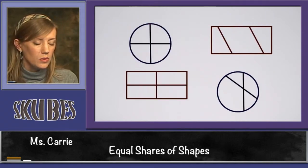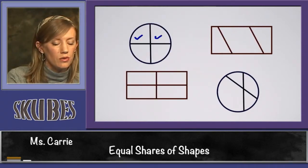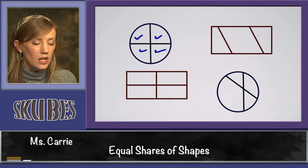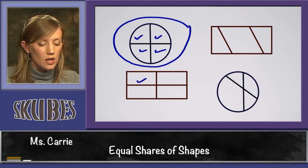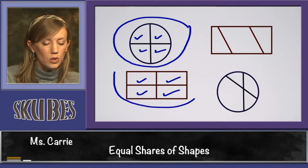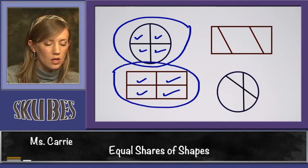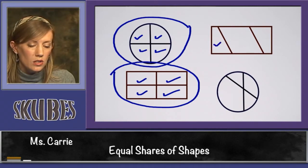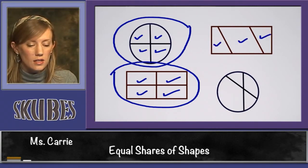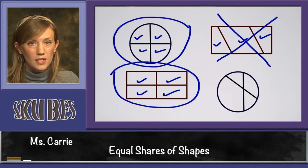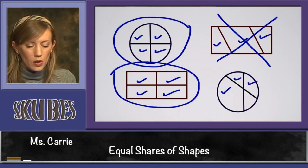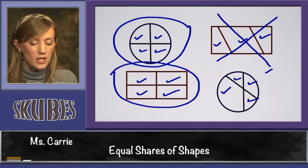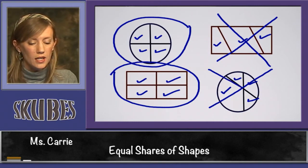Let's look at four more shapes. This first one — one, two, three, four — looks like the one we did earlier. That one is equal. This one down here also looks like the one we did earlier — this is divided into four equal shares. This right here — one, two, three — is not equal. All those pieces are not the same. And this one is divided also, but the pieces aren't equal. So this shape is not divided into equal shares.